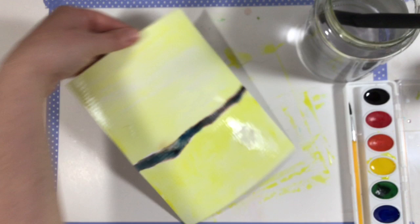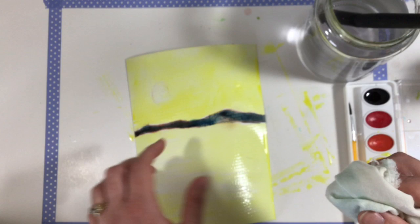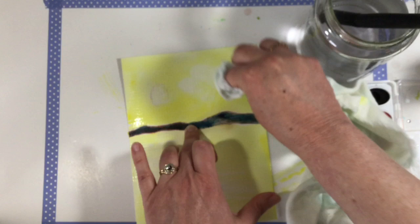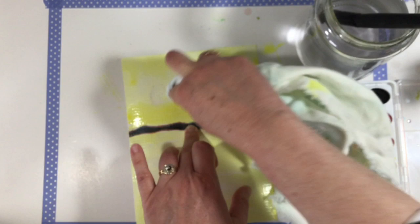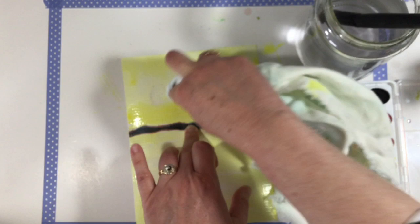Now while it's still wet we're going to take that rag and lift out some clouds. So hold it down right here, just go across like so. You can have some coming across your sun if you want, and you can lift out some clouds. Can you see that?